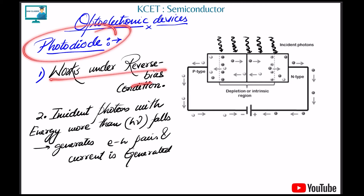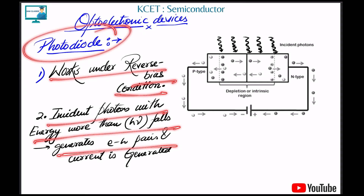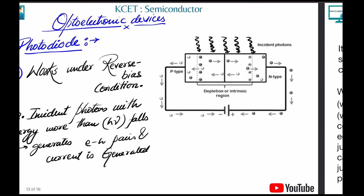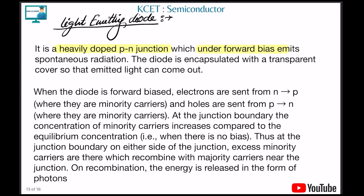A photodiode works under reverse bias condition. Whenever photons are incident on it, it generates electron-hole pairs and current is generated. An LED is heavily doped and works under forward bias condition.